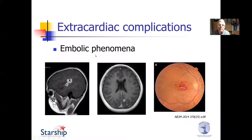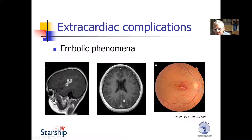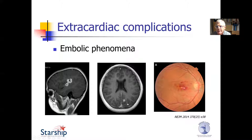Embolic phenomena are common in bacterial endocarditis. This is an example of a brain abscess in a child with endocarditis — a patient of mine who had rheumatic heart disease and endocarditis on a rheumatic aortic valve, with little septic emboli spots throughout the brain and a larger one visible here. One can also have emboli to the eye — these are the characteristic Roth spots with pale centers — and also to the kidneys, fingers, and other organs.